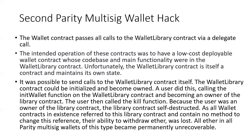However, that wallet library contract was not a stateless library. It had its own state and it was a regular contract, so you could send calls directly to it. Using delegate call, the wallet library contract could be initialized and became owned. A user came in — similar to our Eve example — became the owner of the library contract, then called the kill function or self-destruct function. Because they were the owner, they were allowed to do that. The library contract self-destructed, and since all the wallet contracts referred to it, those wallet contracts no longer worked — you couldn't get the ether out of them. A lot of ether was permanently unrecoverable in those Parity multisig wallets.